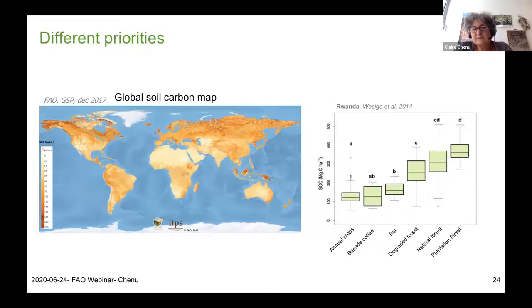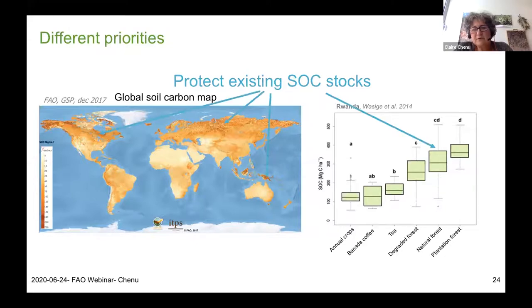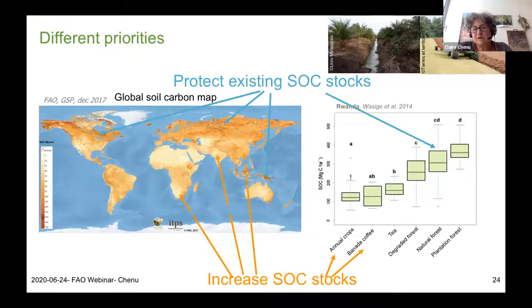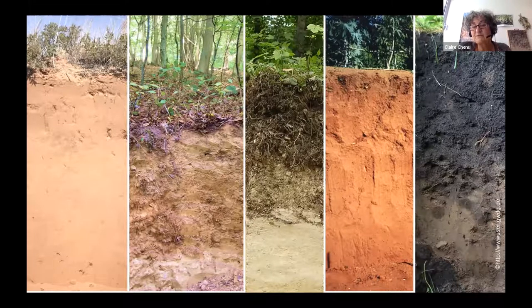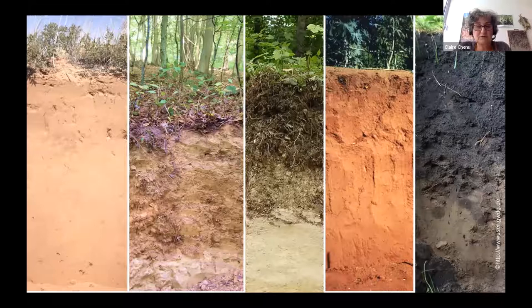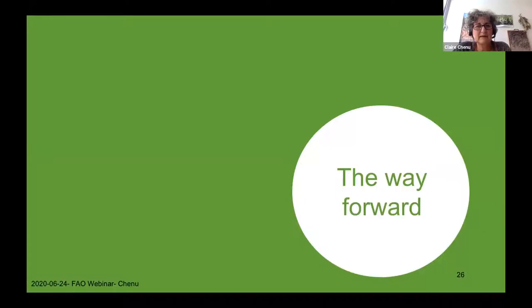Depending on the area of the world, there are different priorities. In northern areas or forests, the priority is to protect existing soil organic carbon stocks, while in areas where contents are poor and soil fertility is a problem, the priority is to increase from the present level. Soils are extremely diverse, so management options have to be adjusted to the soil type.